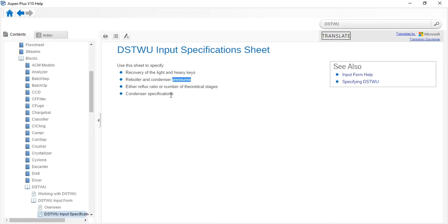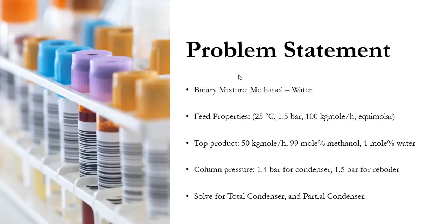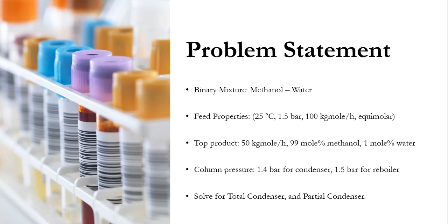Today's exercise involves a binary mixture of methanol and water. The feed enters at 25°C, 1.5 bar, 100 kg·mol/hr, as an equimolar mixture with mole fractions of 0.5 each. The top product has a molar flow rate of 50 kg·mol/hr with 99 mol% methanol and 1 mol% water. Column pressure is 1.4 bar for the condenser and 1.5 bar for the reboiler. We will solve for both total and partial condenser cases.